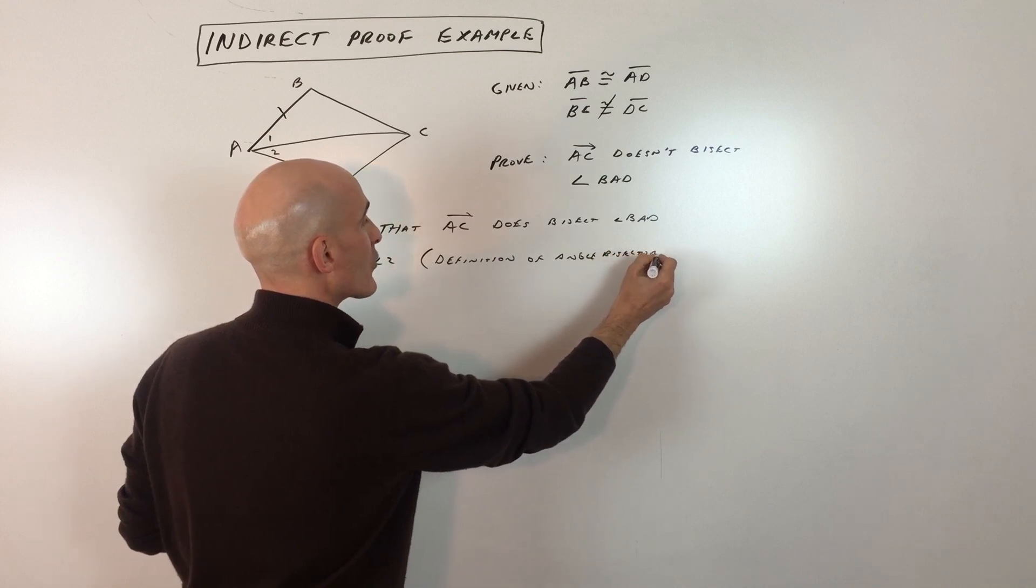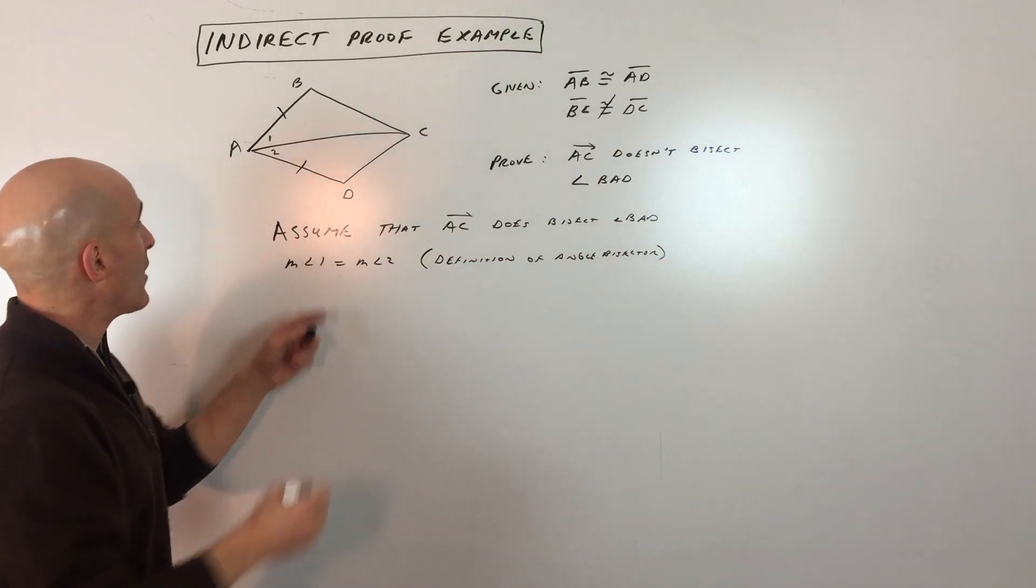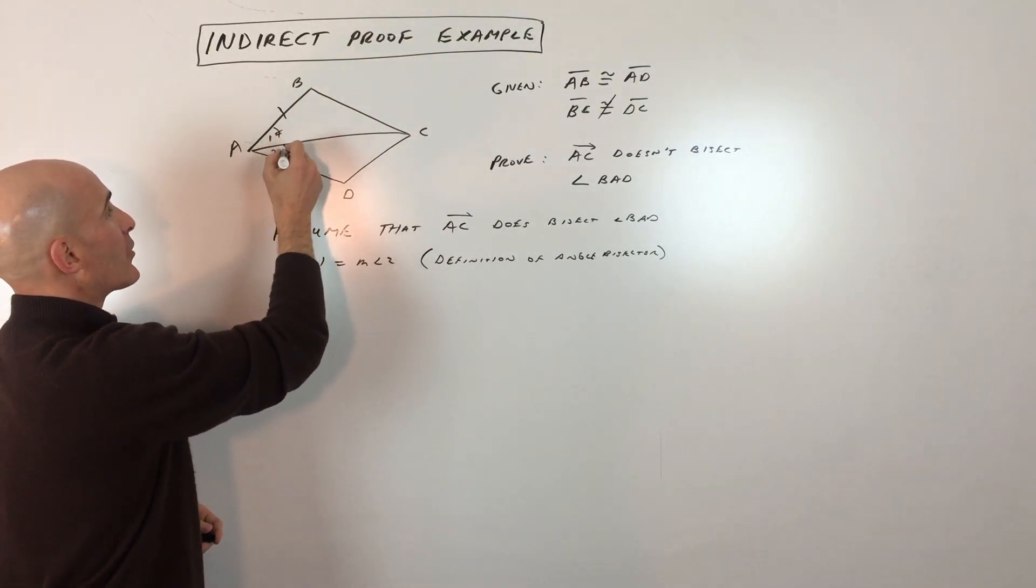This is more of a paragraph type proof as opposed to a two column proof. Now we know that angle one is congruent to angle two. I'm going to mark that on our diagram.